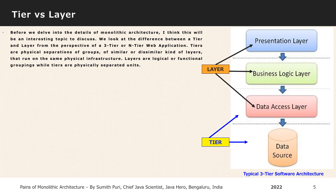Till now, you might have used these interchangeably, but after you hear me out, I am sure you will be able to identify and use these terms more aptly. Tiers are physical separations of groups of similar or dissimilar kinds of layers that run on the same physical infrastructure. Layers are logical or functional groupings while tiers are physically separated units.